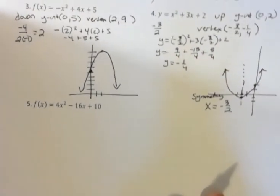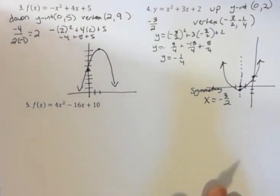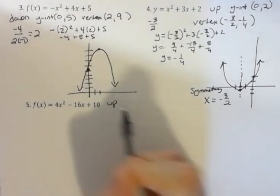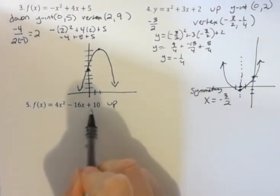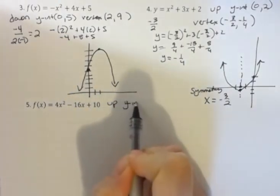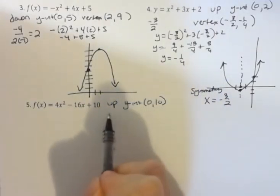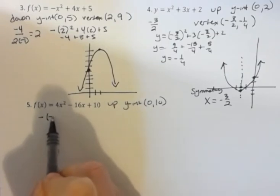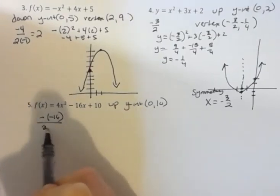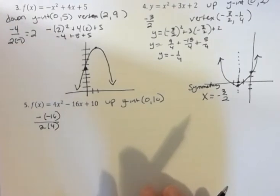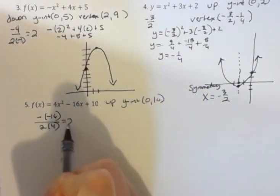And the last one, I'm going to do the same thing. I'm going to look at the a and tell you that it goes up. I'm going to look at the last number here, and I'm going to say that the y intercept then is 0, 10. And I'm going to find the vertex by taking negative negative 16 over 2 times a. And that makes 16 over 8, which is 2.